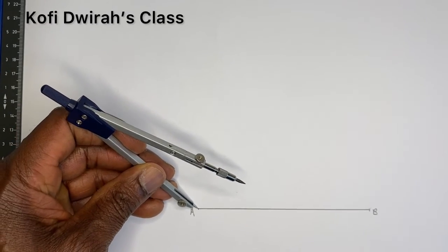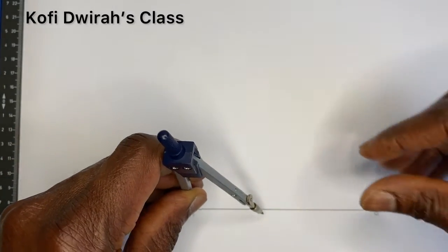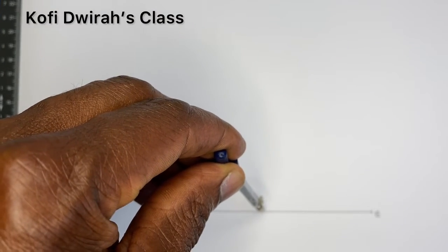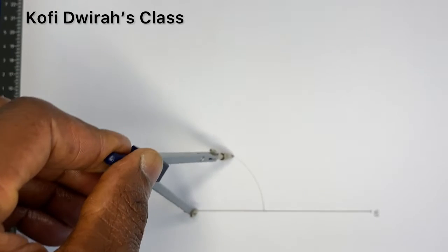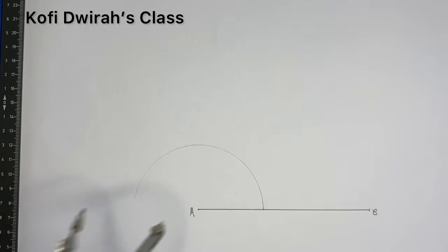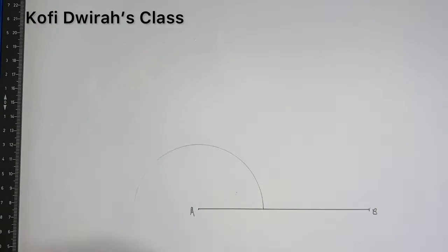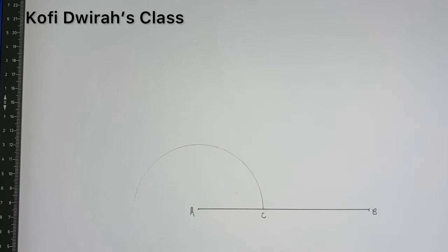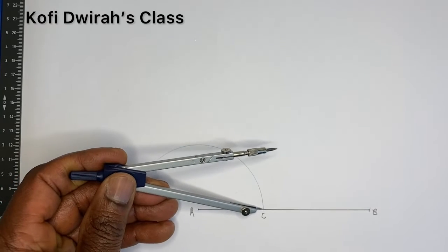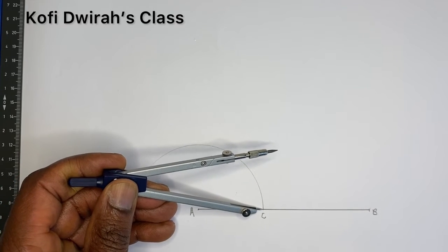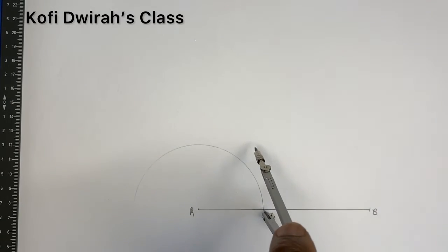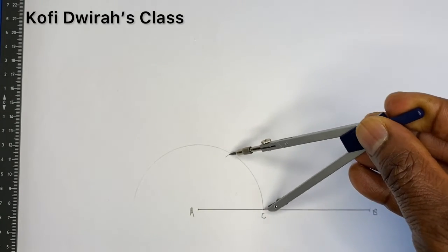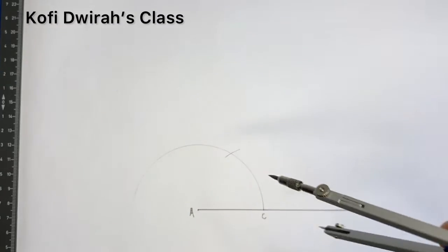At point A, open your compass to any radius. Then you draw an arc. We have this point to be point C. Then, at point C, with the same radius, you draw an arc to get point D.